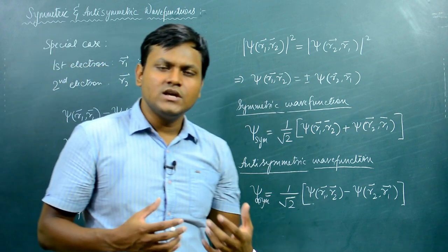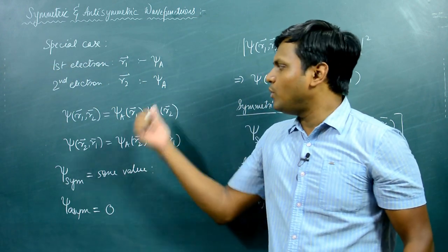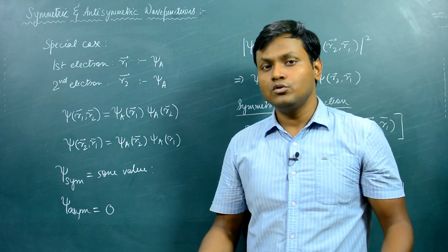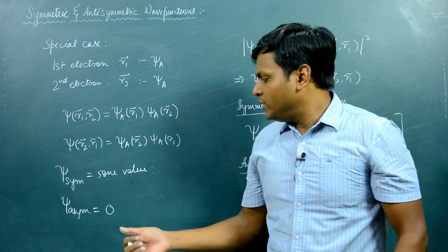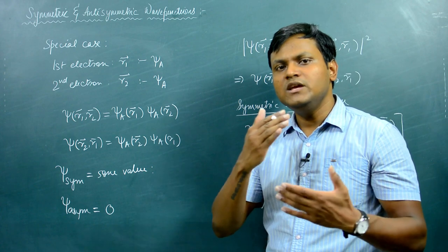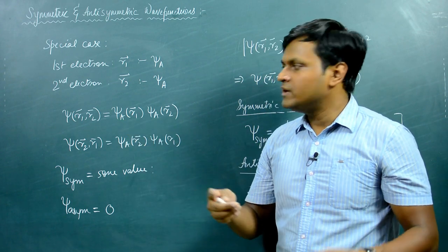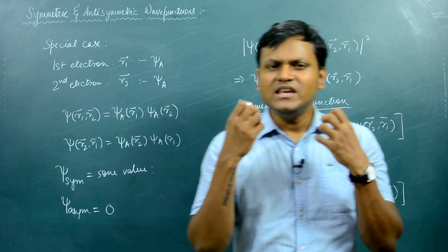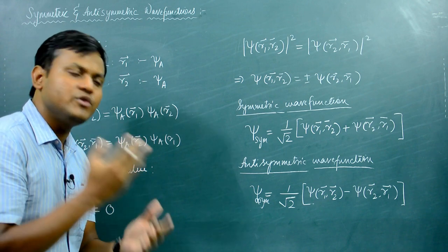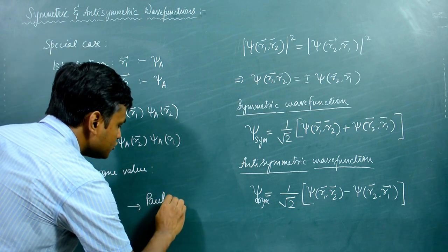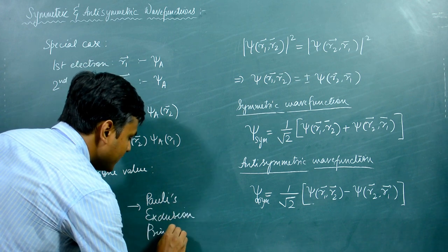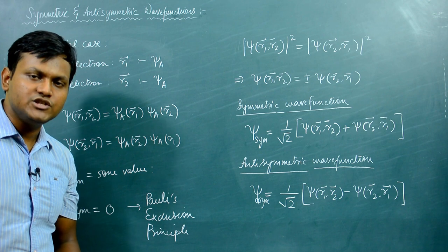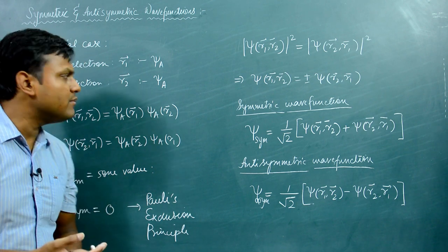It is not possible for the wave function of any system to go to zero, because this would mean the two particles do not exist at all. Since the particles are existing somewhere, their wave function must have a finite value; otherwise the probability distribution goes to zero. Therefore, the antisymmetric wave function going to zero means this situation is simply not possible — both particles cannot exist in the same quantum state. This leads to the Pauli exclusion principle.